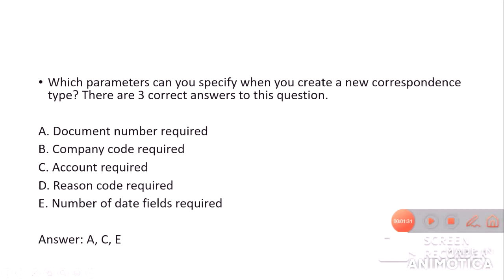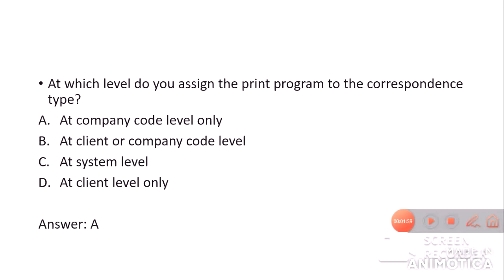The fourth question is: which parameters can you specify when you create a new correspondence type? As we have seen, you can specify document number required, account required, and the number of date fields required — not company code or reason code. The fifth question is: at which level do you assign the print program to the correspondence type? The answer is at the company code level.